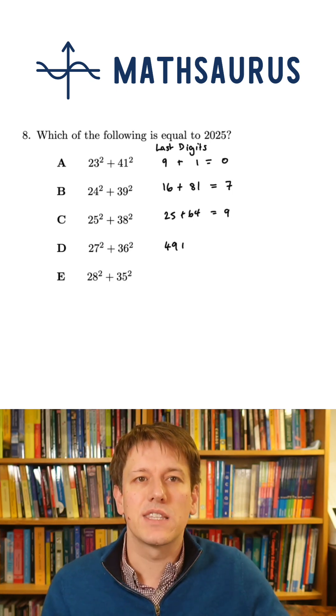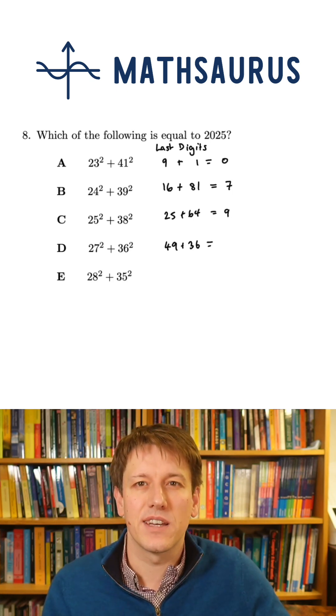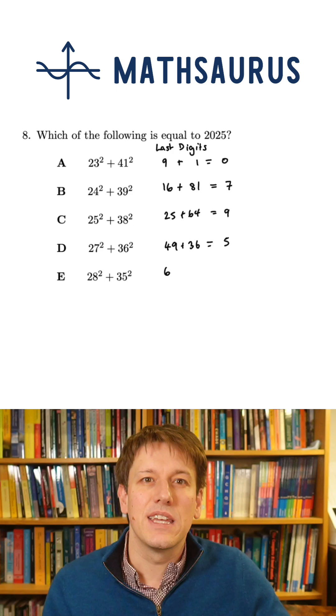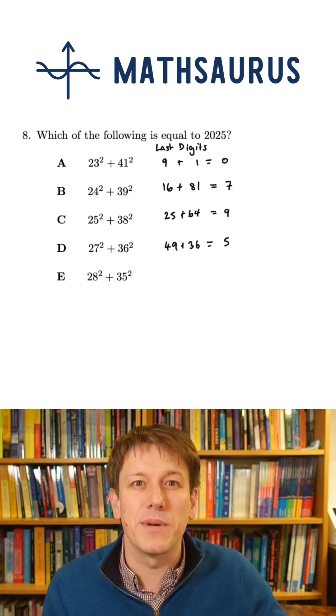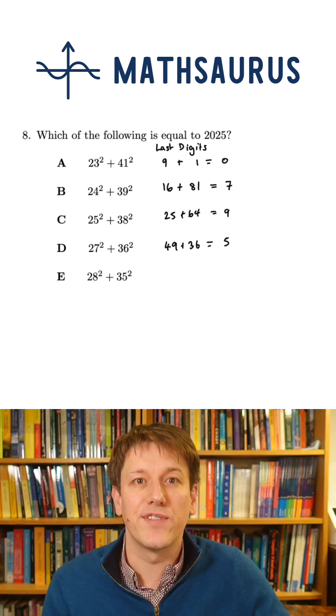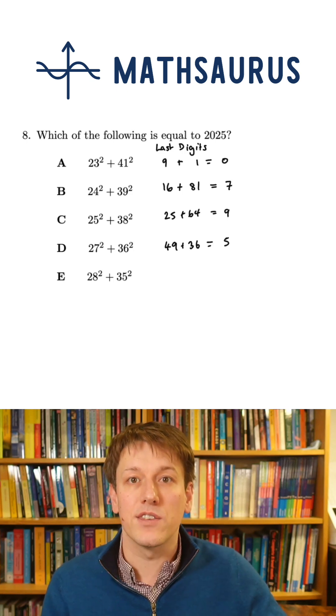For D, we've got 7 squared plus 6 squared, so 49 plus 36. And the last digit for this one is 9 plus 6, which is 5. So that's more promising because 2025 does end in a 5. So that's the first one that could be the answer.